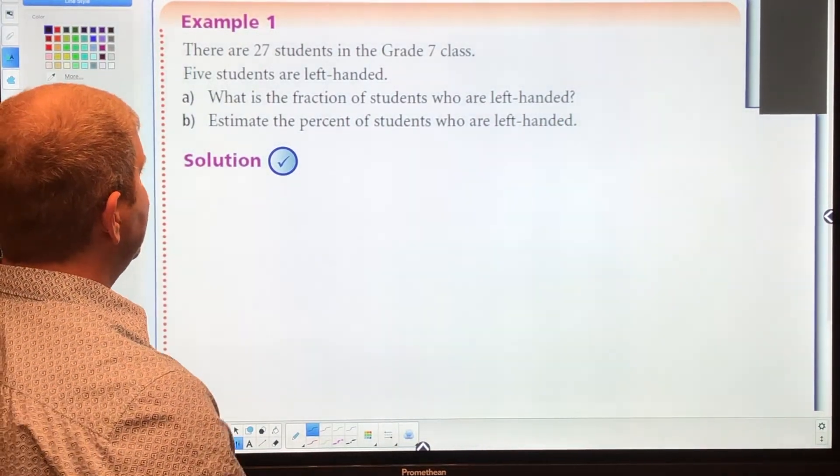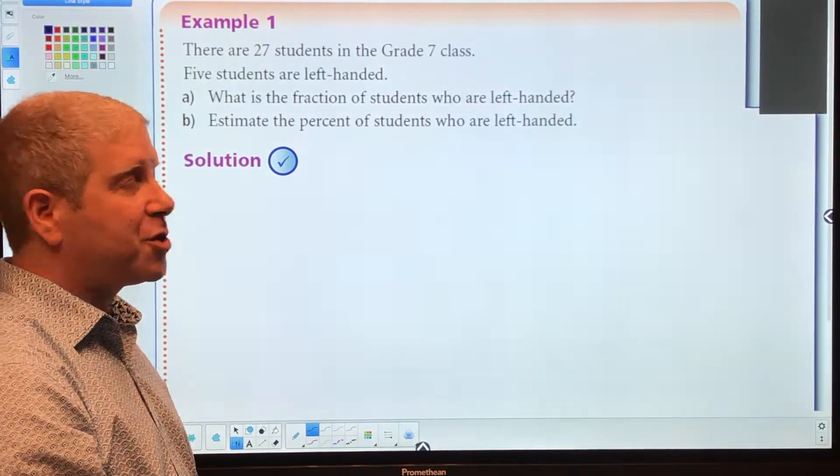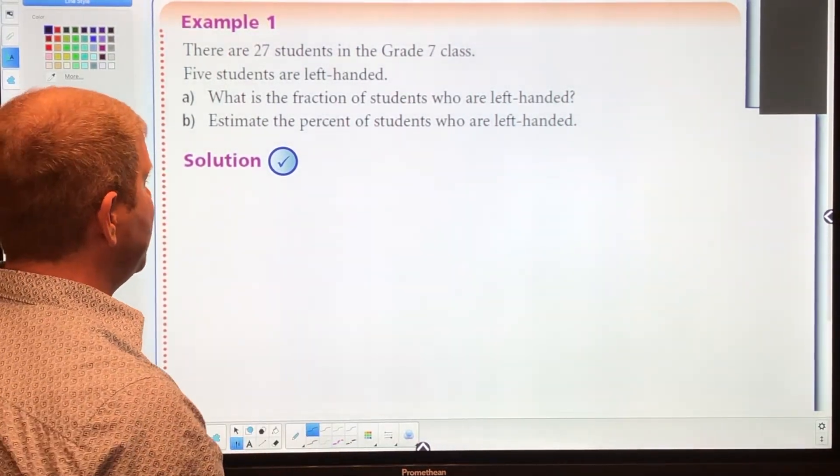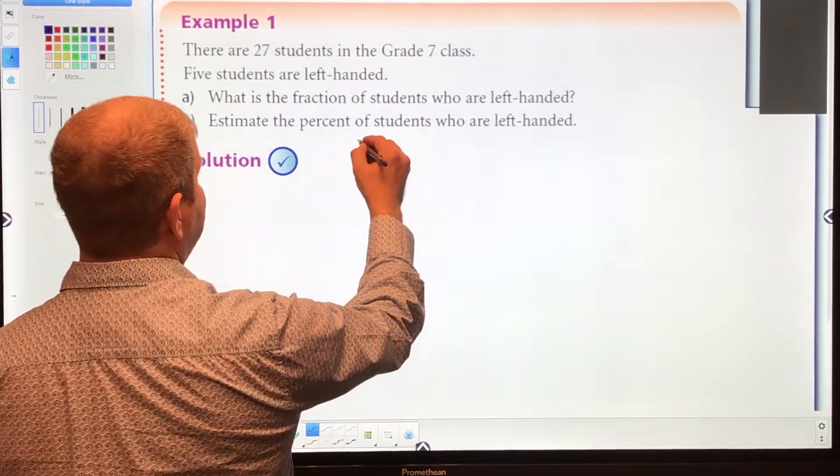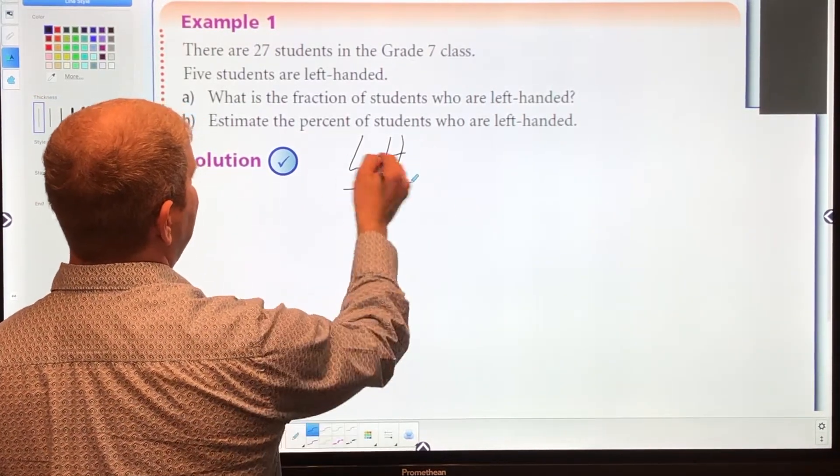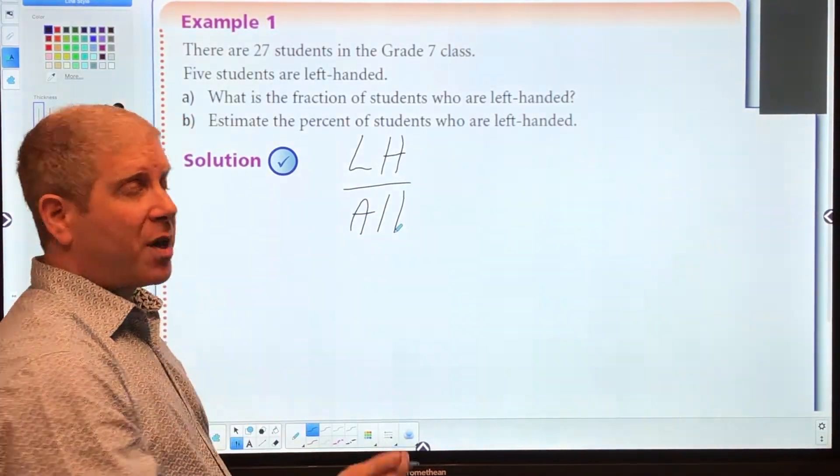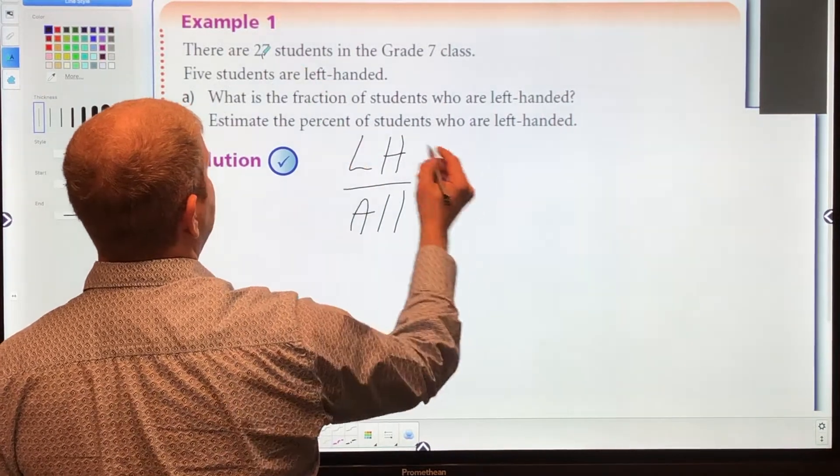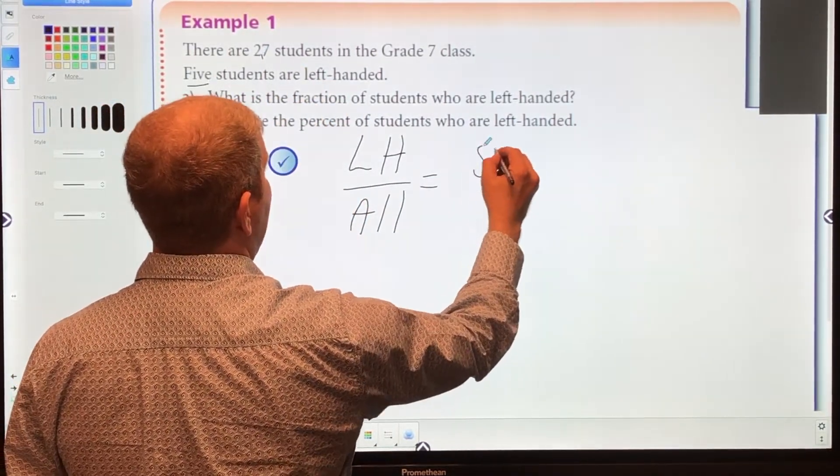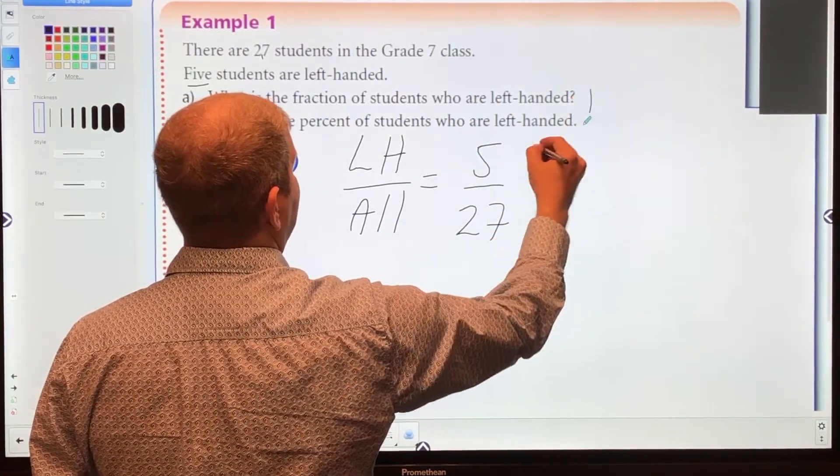Let's go to example number one. There are 27 students in the grade 7 class. Five students are left-handed. What is the fraction of students who are left-handed? We have 5 left-handed students divided by a total of 27. So that answers question A.